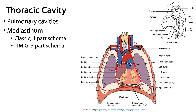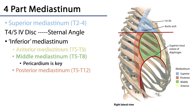The classic system is a four-part schema. The newer system, as of about 2017, was produced by the International Thymic Malignancy Interest Group and has a three-part schema. Let's look at each of these.